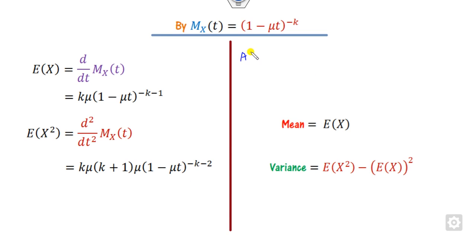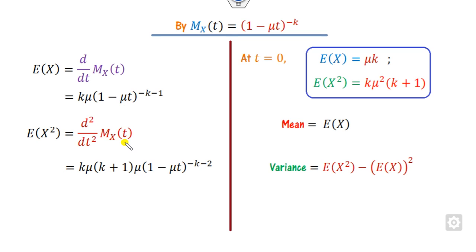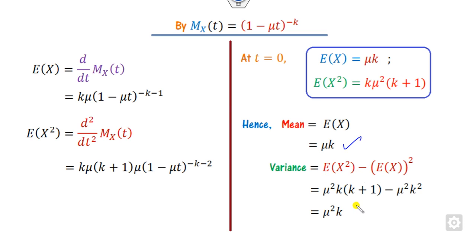Once you take the first and second derivatives and evaluate at t=0, the terms simplify — the first gives k*mu and the second gives k*mu squared — and you can substitute these values to get the expressions for the mean and the variance.